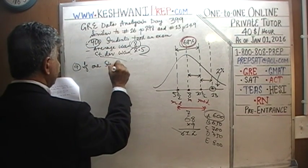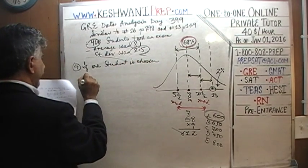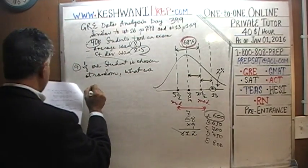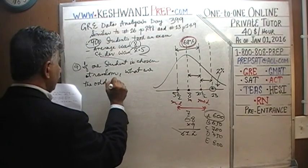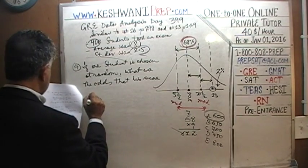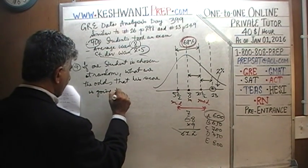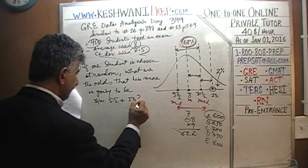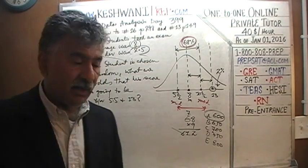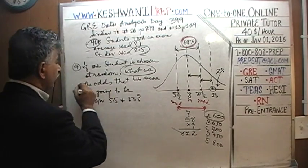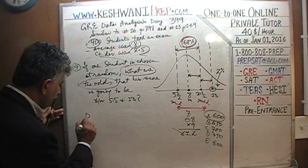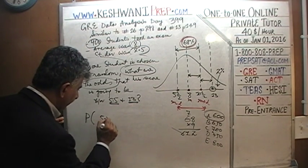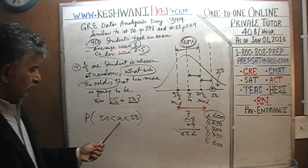Part D: if one student is chosen at random, what are the odds that his score is going to be between 5.5 and 13? The score has to lie between 5.5 and 13.